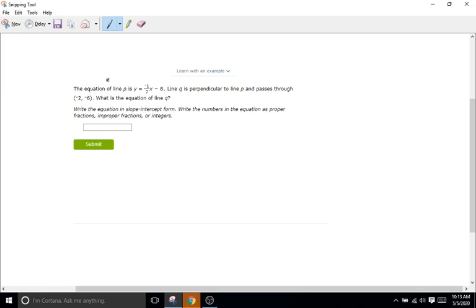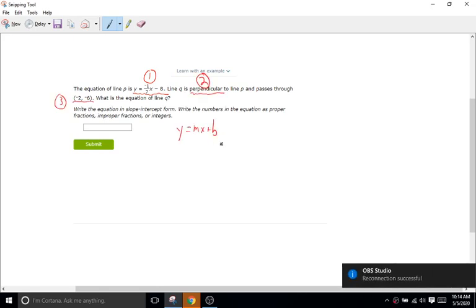Let's read the problem first. The equation of line P is y equals 1/7x minus 8. Line Q is perpendicular to line P and passes through the point (2, -6). What is the equation of line Q? The three things I tell them to isolate are the equation of our first line, the word parallel or perpendicular, which is what we are really going to use as a basis for our solution.